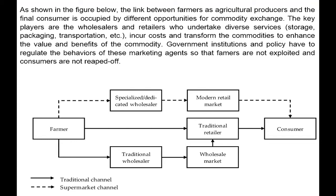Government institutions and policies have to regulate the behaviors of marketing agents so that farmers are not exploited and consumers are not ripped off. There are multiple possible channels through which the chain can move from farmer to consumer: through specialized wholesalers and modern retail supermarkets directly to consumers; through the traditional wholesaler and traditional wholesale market to the traditional retailer and consumers; or directly from the farmer through the traditional retailer to consumers. There are therefore a plethora of channels through which markets can be created to link farmers to consumers.